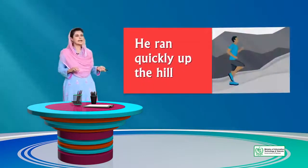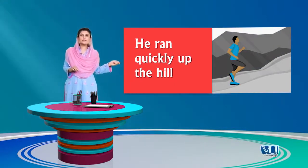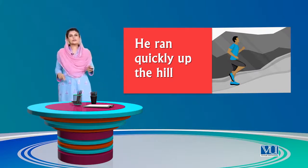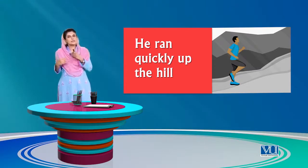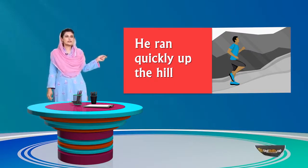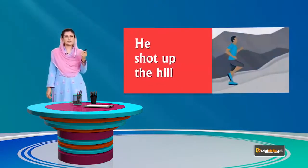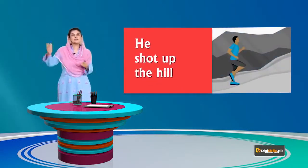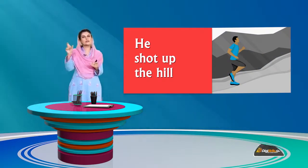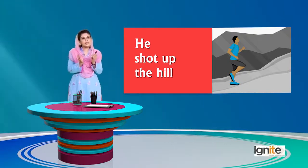Consider this sentence: 'He ran quickly up the hill.' There's a verb, 'ran,' and an extra word 'quickly' to describe how he ran — so two words are being used. Instead, you can just say 'he shot up the hill,' which means he ran quickly. The verb 'shot' tells you he ran quickly, so if you use the exact verb, you can convey meaning in fewer words.